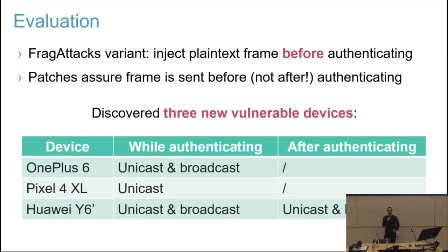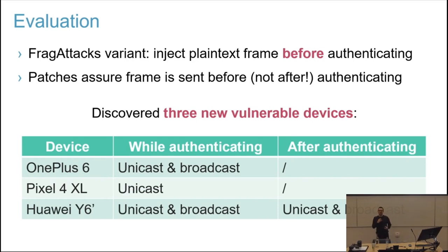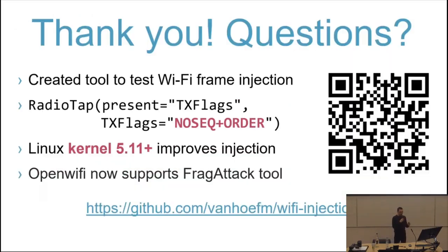Last but not least, we checked whether this really makes a difference — are these really just edge cases, or does this have an impact in practice? We did an evaluation testing one frack attack variant where you inject a plaintext frame right before completing the four-way handshake. It's essential that the injected plaintext frame is sent before the last message in the handshake and that they are not accidentally reordered. We tested this against a few smartphones and noticed three smartphones that were vulnerable that we had not detected before — you can inject a plaintext data frame toward them while the client is still connecting to the Wi-Fi network.